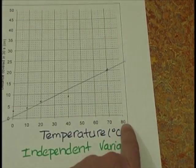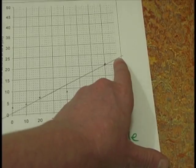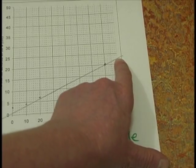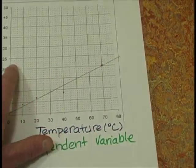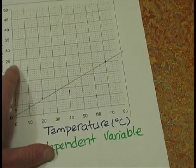We simply go up from 80 degrees and look where our trend line is, then work over to read the value. We want to make a conclusion. A conclusion should include whether your data agrees with your hypothesis. You don't want to say your hypothesis was correct — just say whether your data agrees with it or not. I'll see you next time.